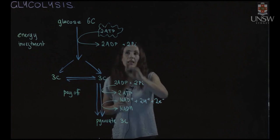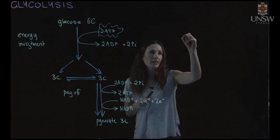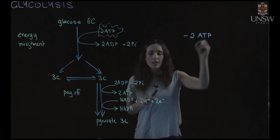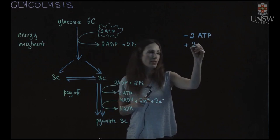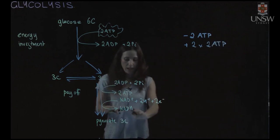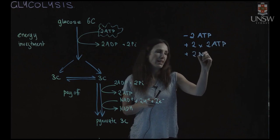So that means in glycolysis this first part here if we look at our accounting we are minus two ATP. And then down the bottom here we are plus two times two ATP. And we also have two NADH.